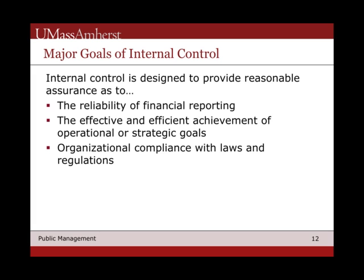The major goals of internal control are to provide reasonable assurance to the governance group — the executive board, whatever the top-level governance is — as to the reliability of financial reporting, whether organizational goals, operational or strategic, are being achieved effectively and efficiently, and the extent to which the organization is actually complying with various laws and regulations. The idea is that you're providing assurance — you can't guarantee something, but you can provide some level of assurance that things are working efficiently, effectively, or reliably.